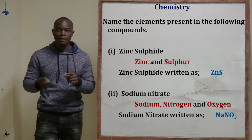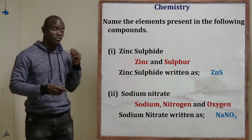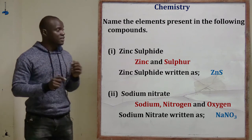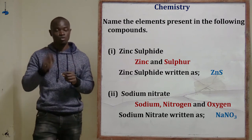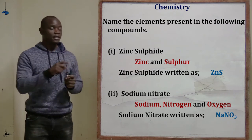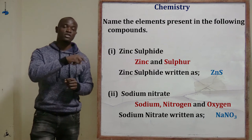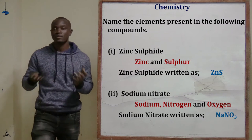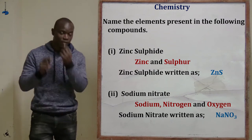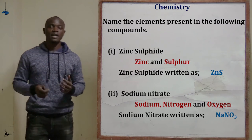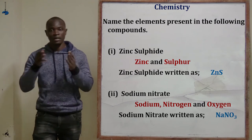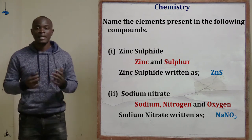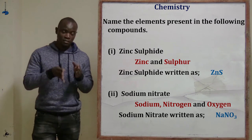For zinc sulfide, writing the formula: the valency of zinc is 2 positive and the valency of sulfur is 2 negative. We write ZnS — the valencies cancel each other out, giving zinc 1 and sulfur 1. So zinc sulfide has only one zinc and one sulfur in the structure.